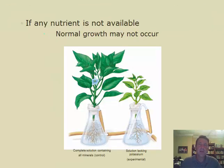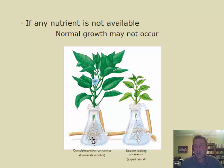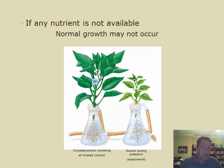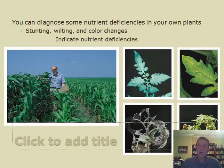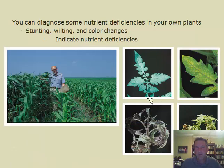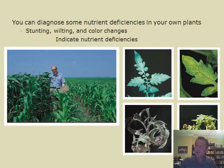If the plant is missing any of those nutrients, it will show some type of stunted growth. Here's an example of two plants: one has all 17 nutrients and one is missing potassium — a macronutrient — and you can clearly see the stunted growth and deficiencies. Farmers and agriculturalists diagnose plants by observing symptoms like yellowing and wilting, which can indicate a specific deficiency, and then add a supplement to the soil to supply that missing nutrient.